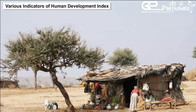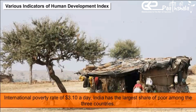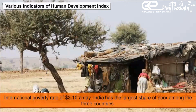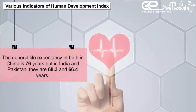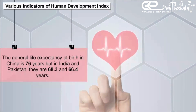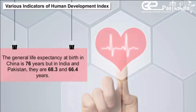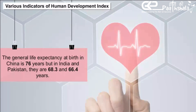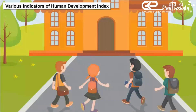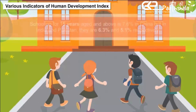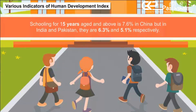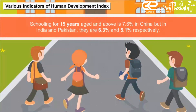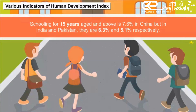By the international poverty rate of $3.10 a day, India has the largest share of poor among the three countries. General life expectancy at birth in China is 76 years, but in India and Pakistan they are 68.3 and 66.4 years respectively. In education, the mean years of schooling for those aged 15 and above is 7.6 years in China, but in India and Pakistan they are 6.3 and 5.1 years respectively.